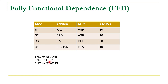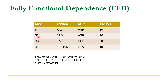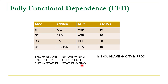S number will functionally determine city, and S number will also functionally determine status. S name is not functionally determining S number because for Raj we are getting multiple values of supplier number. For a given city we are also getting multiple values of supplier number — for Amritsar we are getting two supplier numbers S1 and S2. The same is true for status: for a given value of status we are getting multiple values of supplier number. For status 10 we are getting supplier numbers S1, S2, and S4, so status is not functionally determining S number.